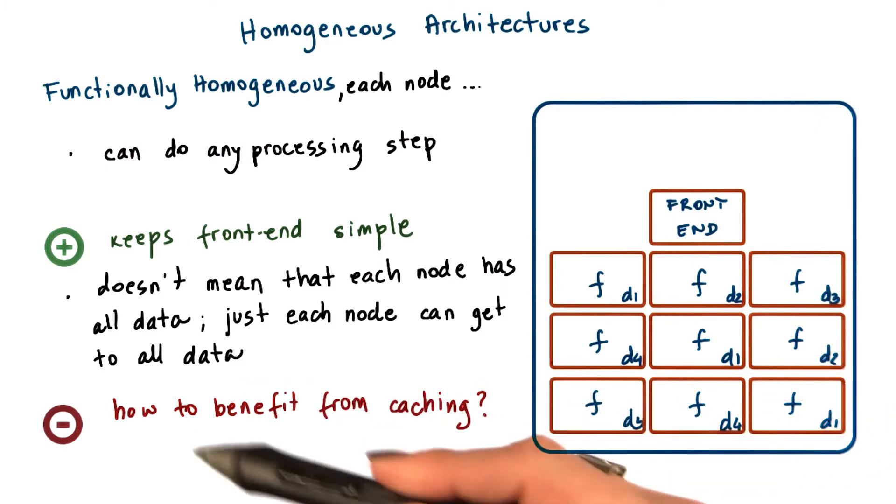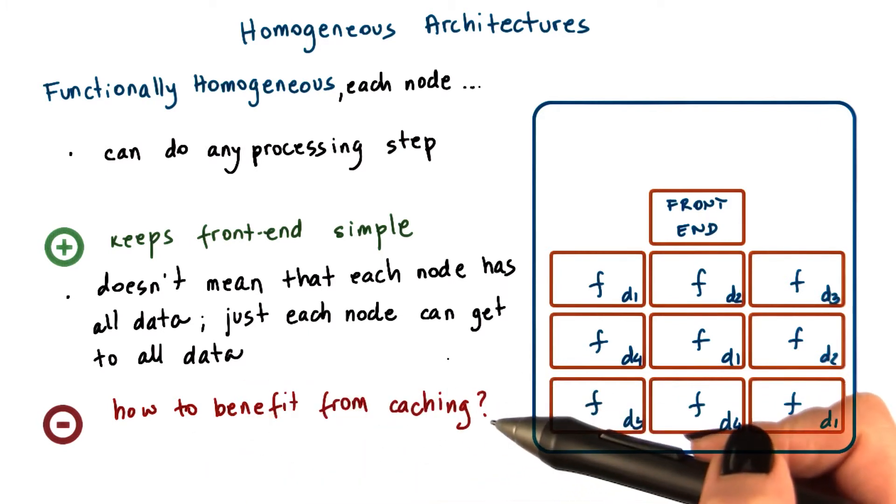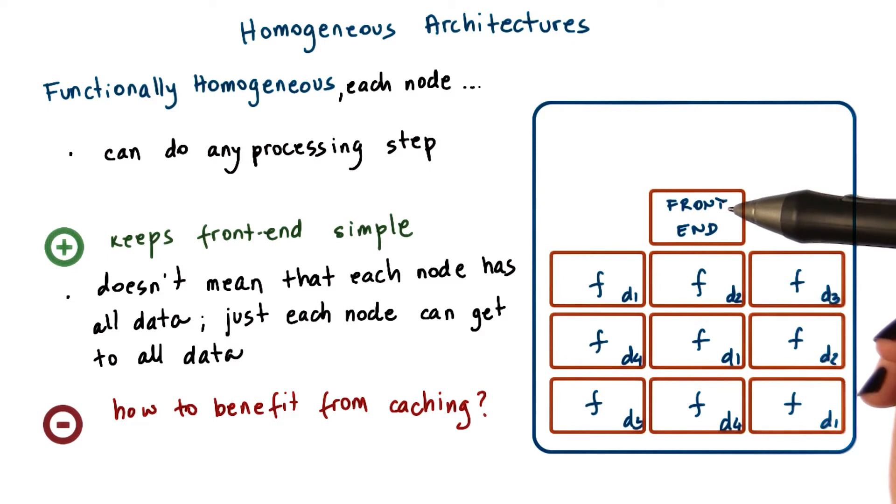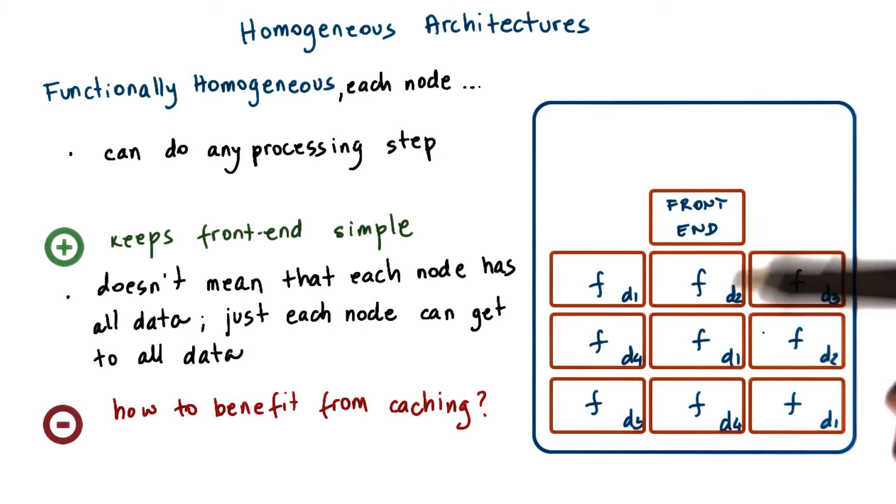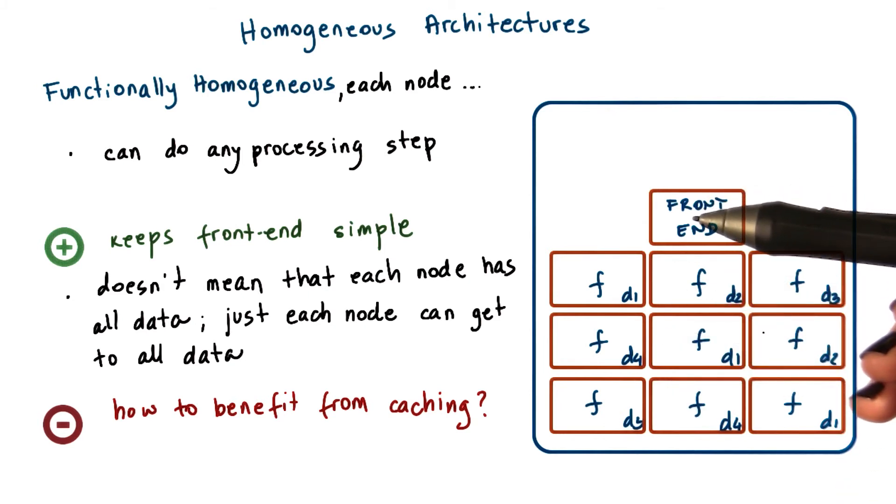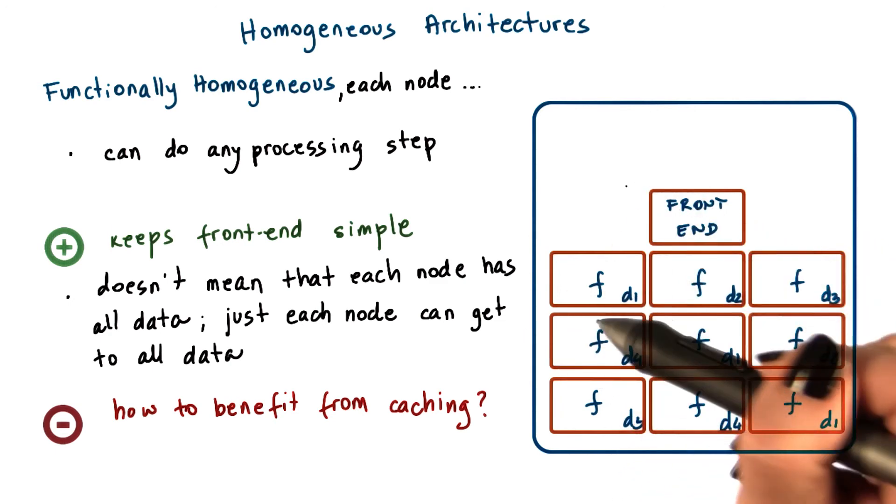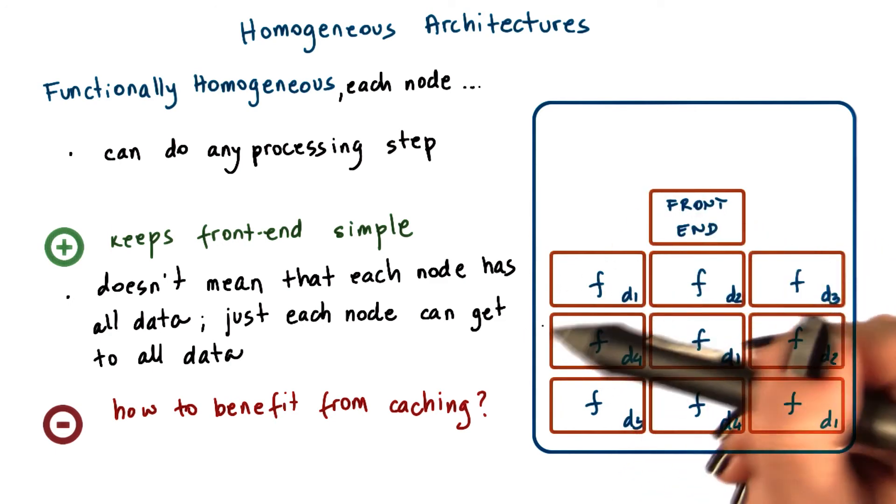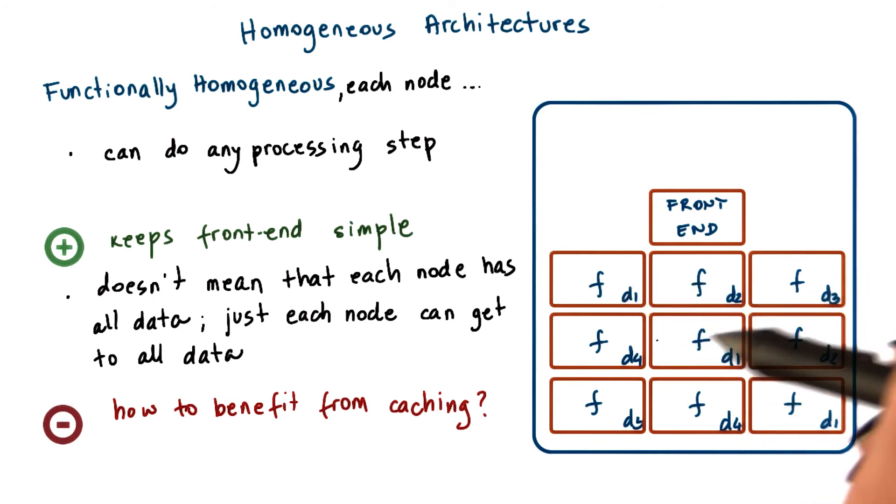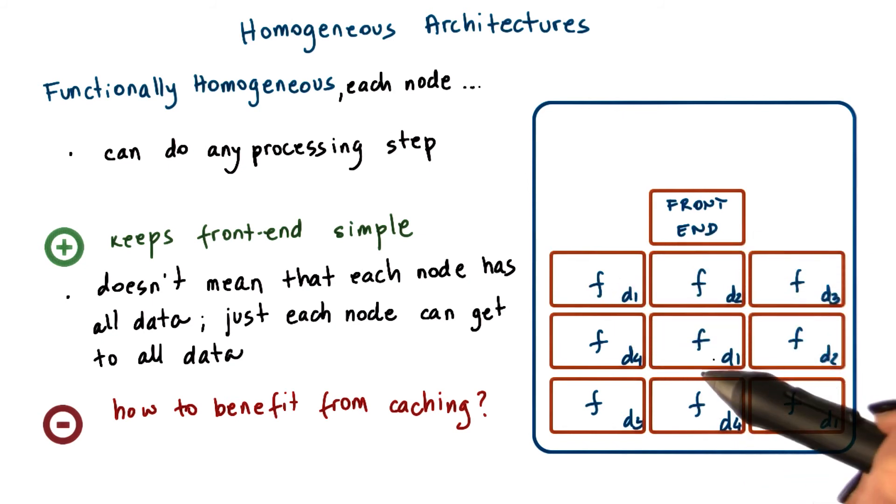One downside of this approach is that there is little opportunity to benefit from caching. If the front-end is simple and it just passes requests round-robin onto the other nodes, it will not be able to explore opportunities like this particular node already serviced some state and therefore it's likely present in its cache, and it will not need to perform a remote access to access that particular information.